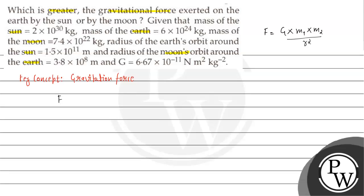For the force between the sun and earth, we use G = 6.67 × 10^-11. Mass of sun is 2 × 10^30 kg, mass of earth is 6 × 10^24 kg, divided by r squared — where r is the distance between the sun and earth, which is the radius of the earth's orbit: 1.5 × 10^11 meters.